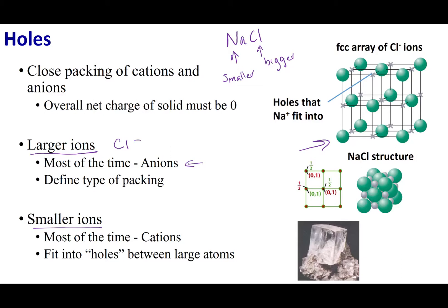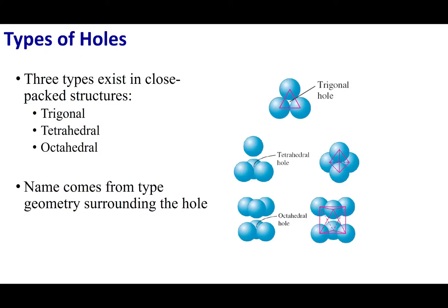The holes that the larger ion creates are where I'm going to stuff the smaller ion in. Going back to our analogy: if I wanted to put basketballs and baseballs together, I first arrange my basketballs, and then the gaps the basketballs create when packing together — that's where I stick my baseballs. One type of gap is called the trigonal hole. If I take three spheres and put them together, there's a gap in the middle — that gap is the trigonal hole.